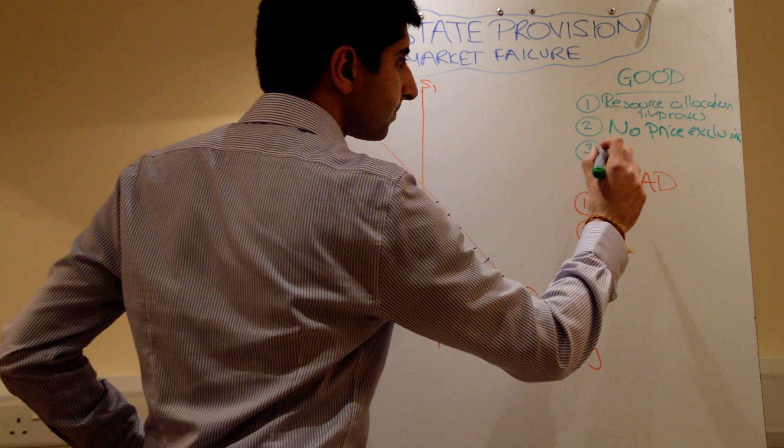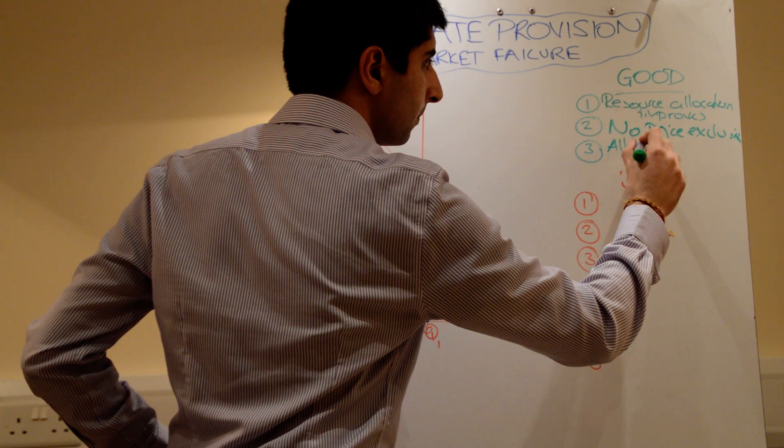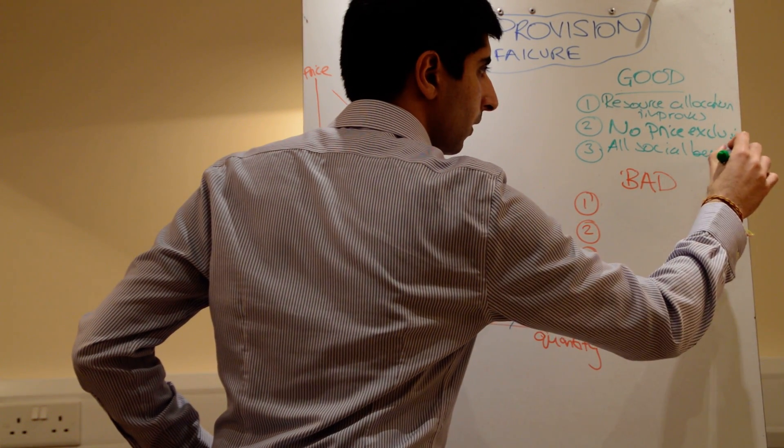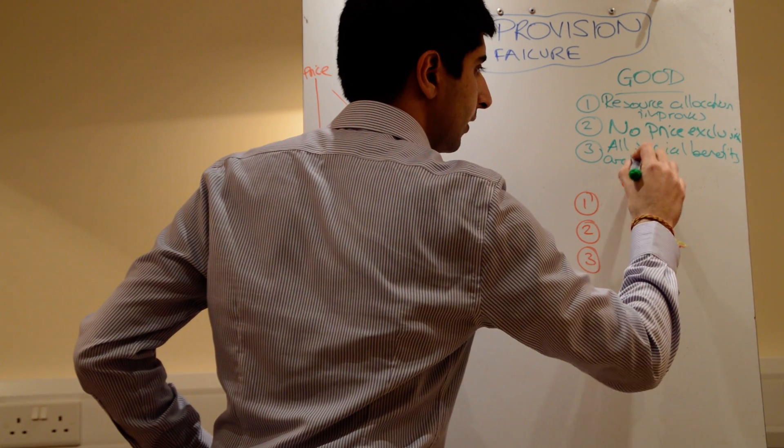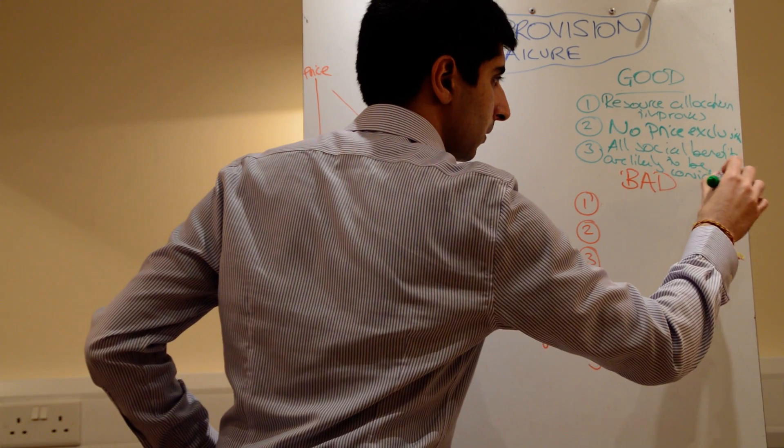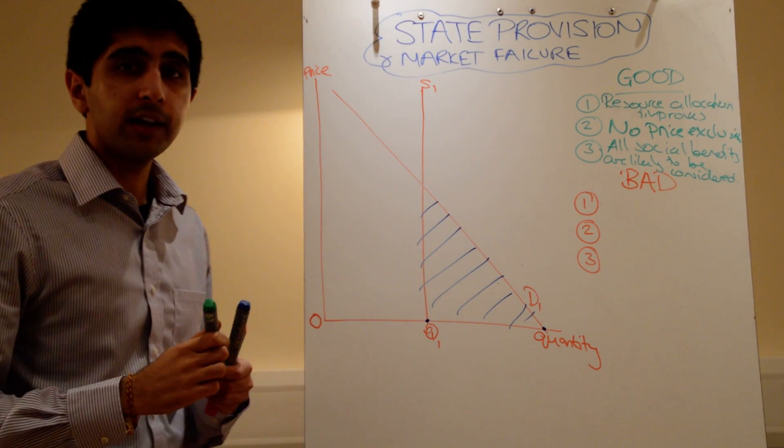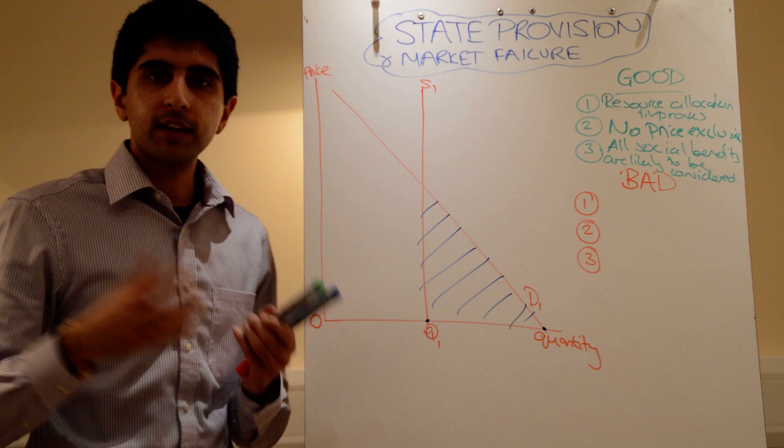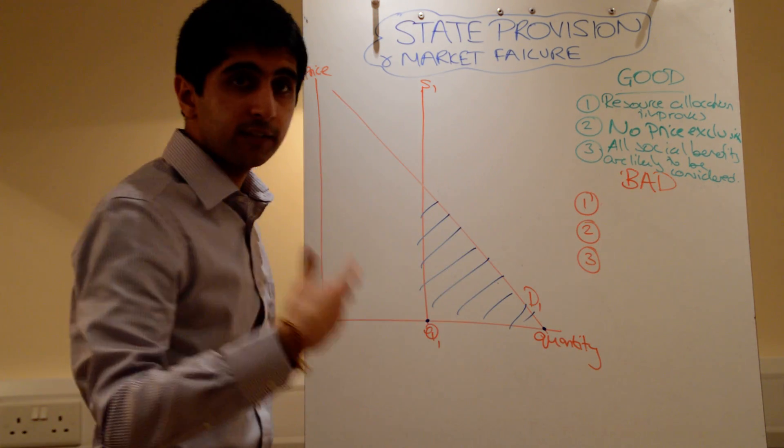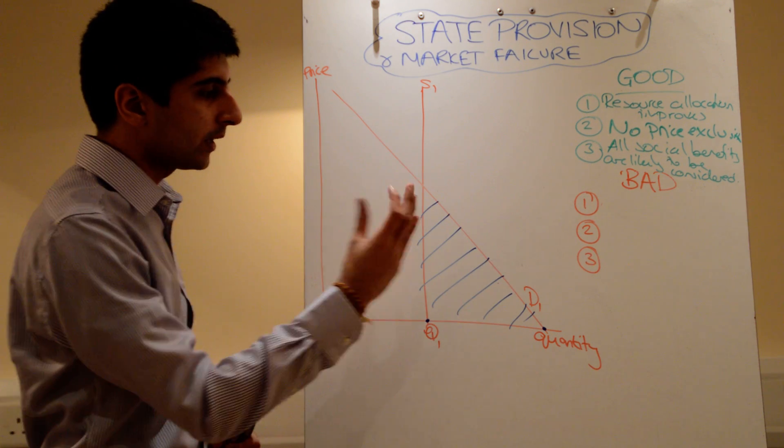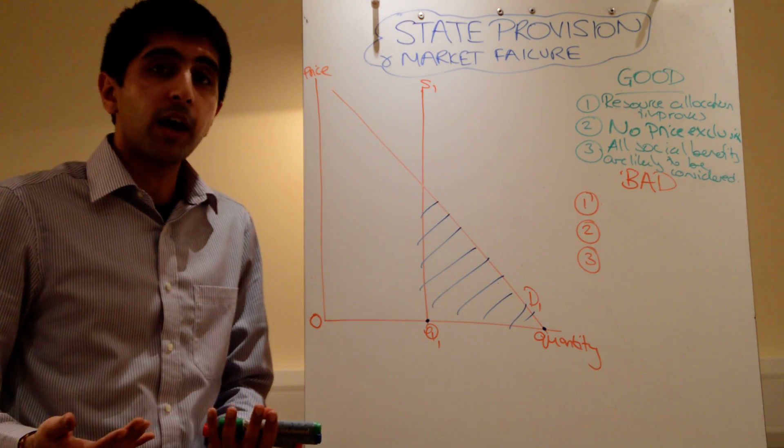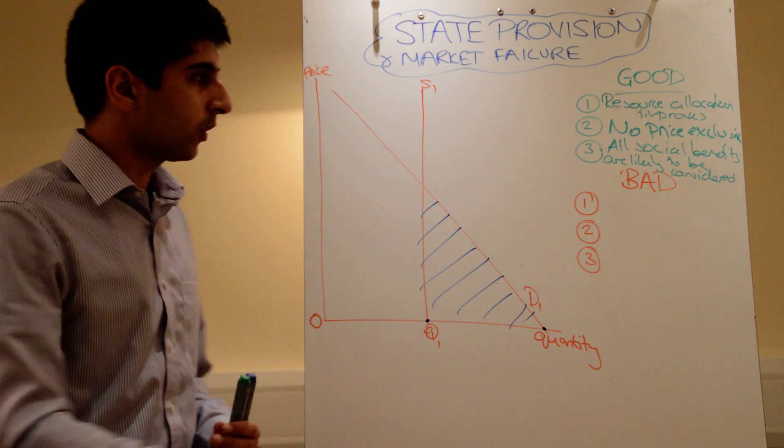And thirdly, all social benefits are likely to be considered. The government, unlike the free market, tries to consider what society desires. So all external benefits, all social benefits are likely to be considered when the government provides the resources, whereas the free market, private agencies will just ignore them. So in that sense, that's good too.